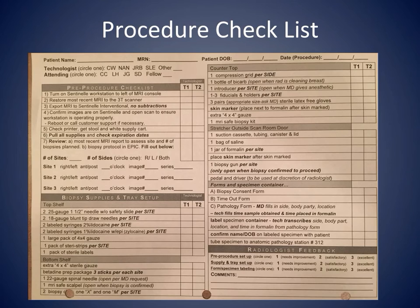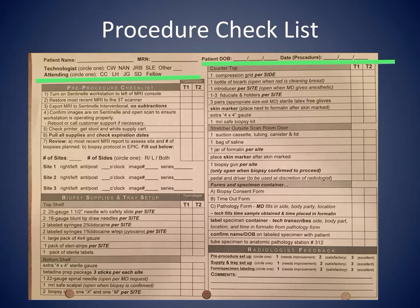If a facility performs MR-guided breast procedures, it is easier to have a dedicated team and/or a process to ensure that everyone involved is trained and has the required skills. We have adopted a procedure checklist to help train new team members, residents, and fellows. The top section of the form records information about the patient, technologist, radiologist, and date of procedure. The form has four main sections.